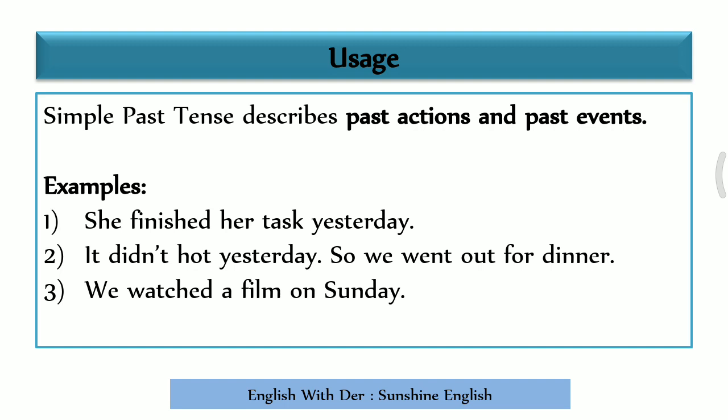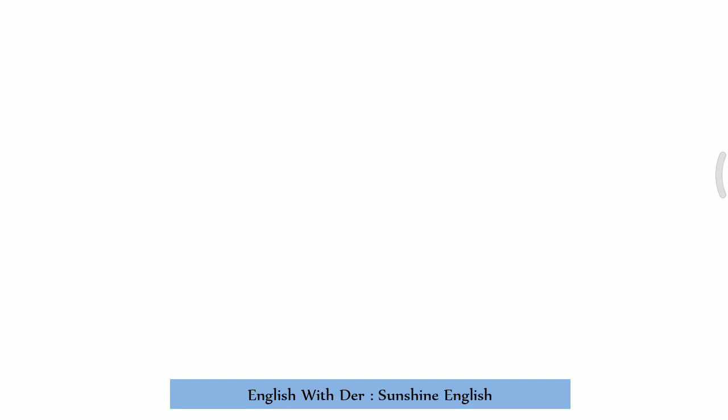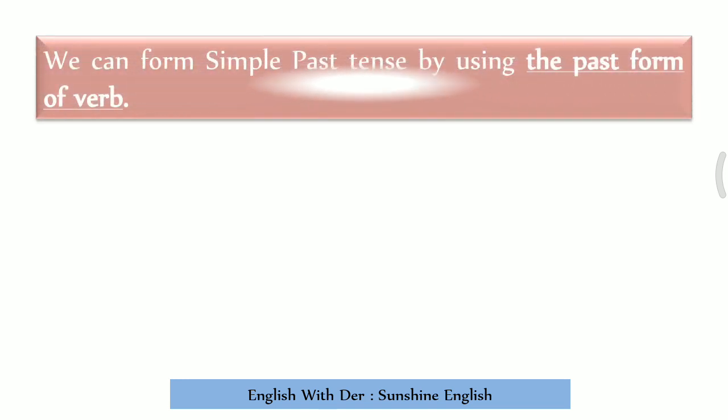'We watched a film on Sunday.' Here, 'on Sunday' or 'last Sunday' helps us identify the past event. We watched a film on last Sunday — so we look back to the past form of the verb.